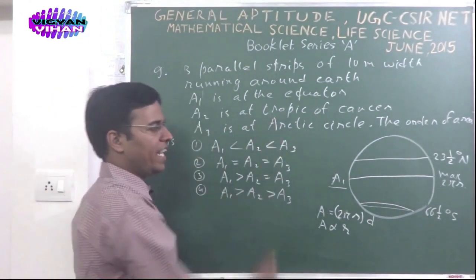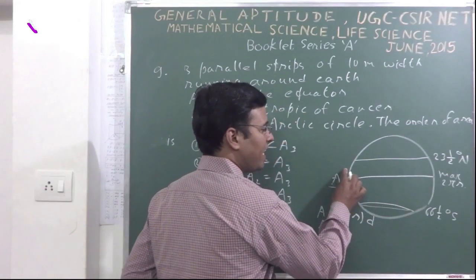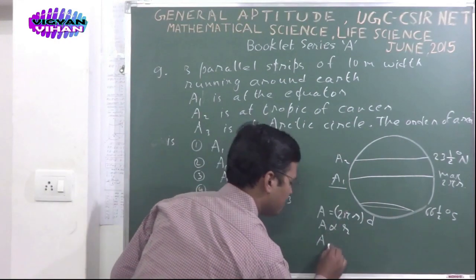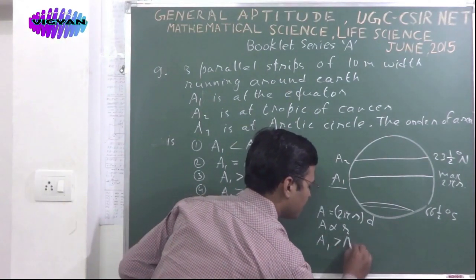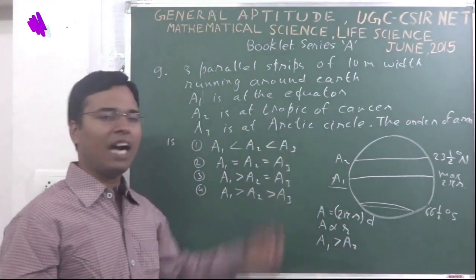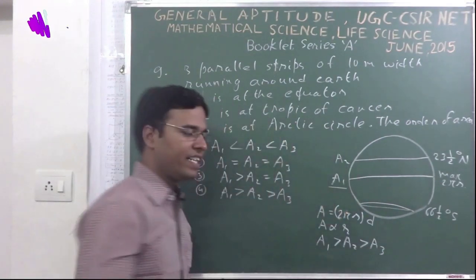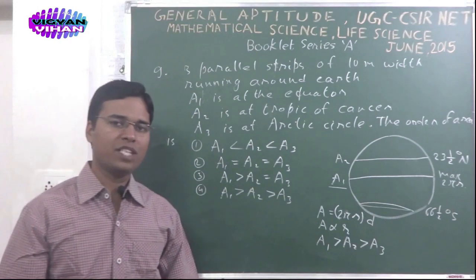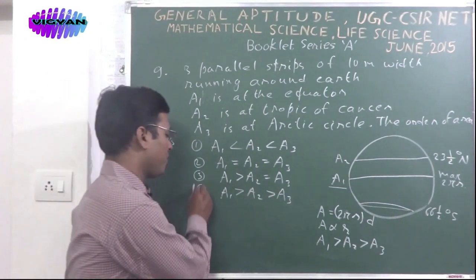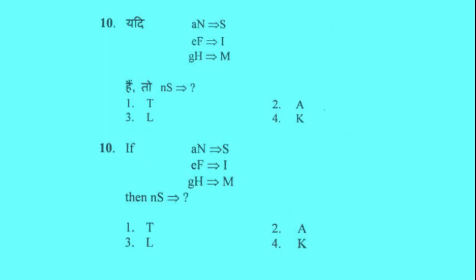A2 is at Tropic of Cancer, so that is lesser area than the A1. So A1 is maximum, greater than A2. The least area would be of Arctic Circle. So A3 is the least area. So the correct answer of this problem, the correct answer of this problem would be option 4. A1 is greater than A2 is greater than A3.